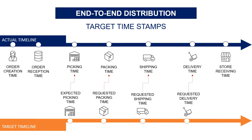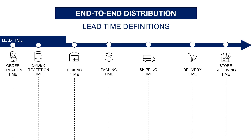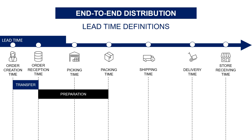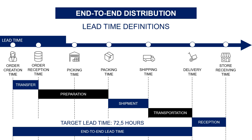For each of these timestamps, you try to be ahead of the target, especially for delivery. To define a lead time by process, you measure the time between two timestamps. The order transfer lead time is between order creation and order reception in the WMS. The preparation lead time is between order reception and end of packing — the responsibility of your warehouse team. The shipment lead time is the time pallets wait for the truck. Then the transportation lead time runs from when the truck leaves the warehouse until pallets arrive at the store. Finally, the reception lead time measures how long it takes the store team to receive goods in the system, giving you the overall end-to-end lead time.